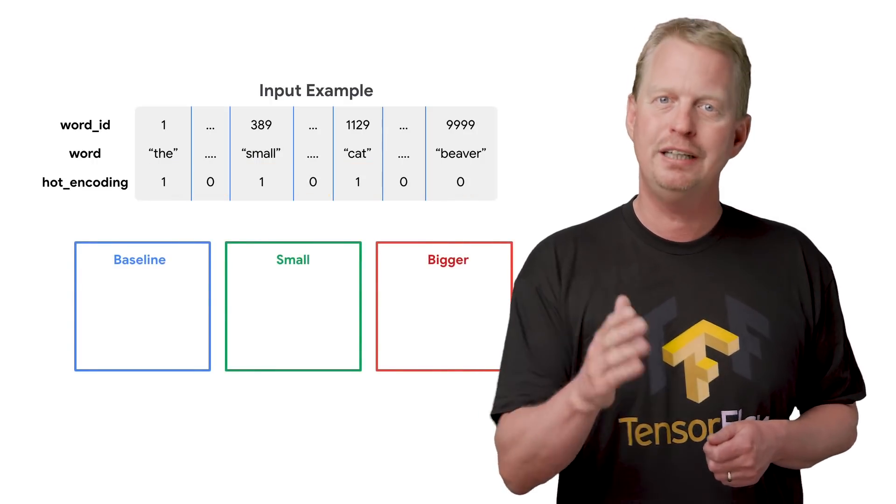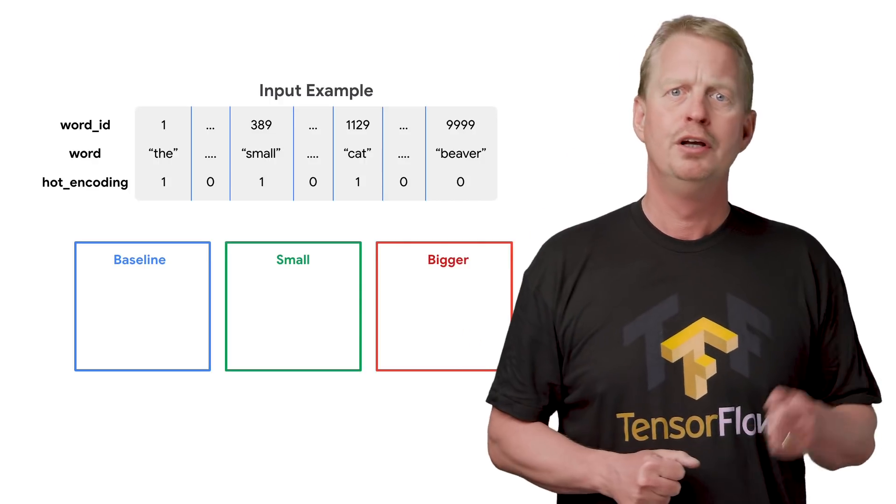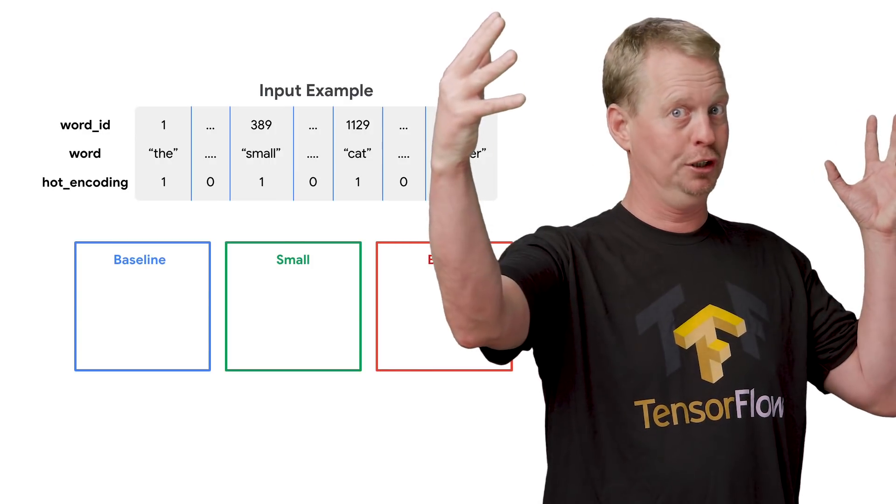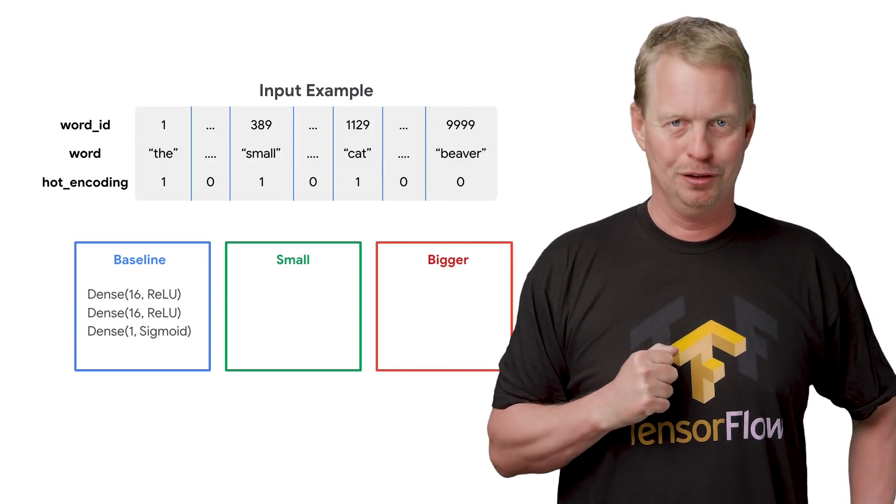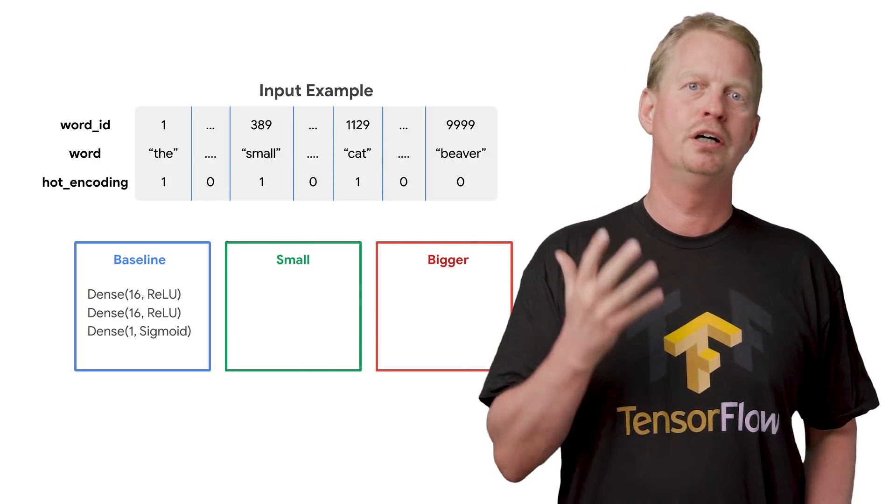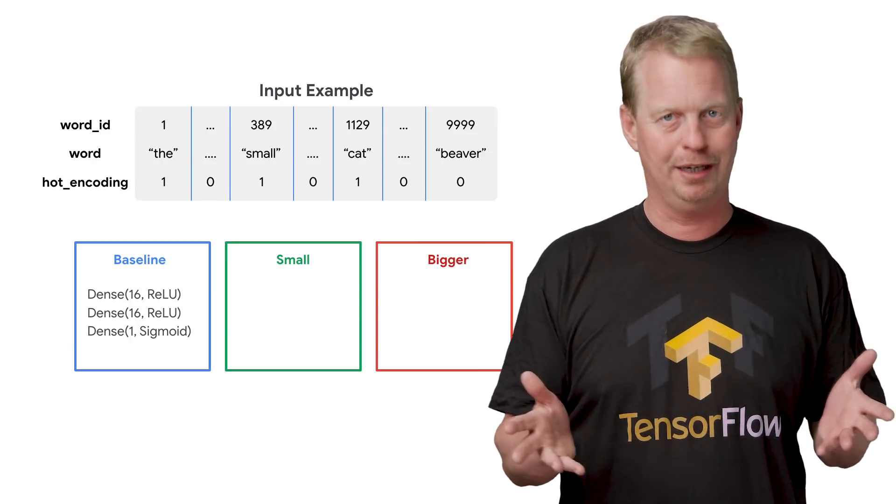Let's now look at three different models we will use to demonstrate overfitting. There will be a baseline model, a very small model, and then a bigger model. Our baseline model will consist of three dense layers, the first two with 16 neurons and relu, and then our classification layer using sigmoid.